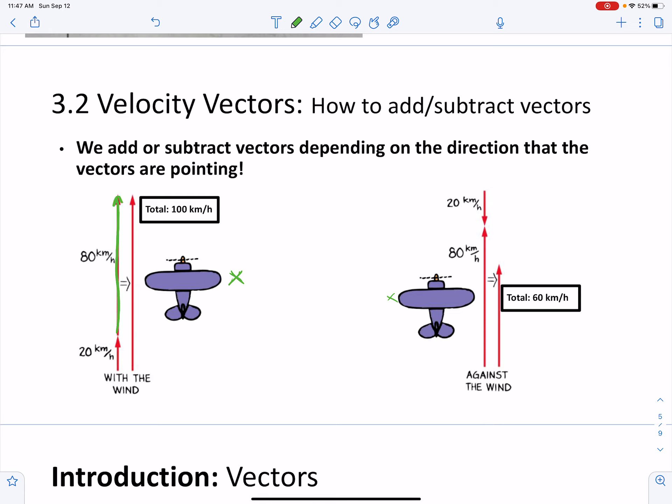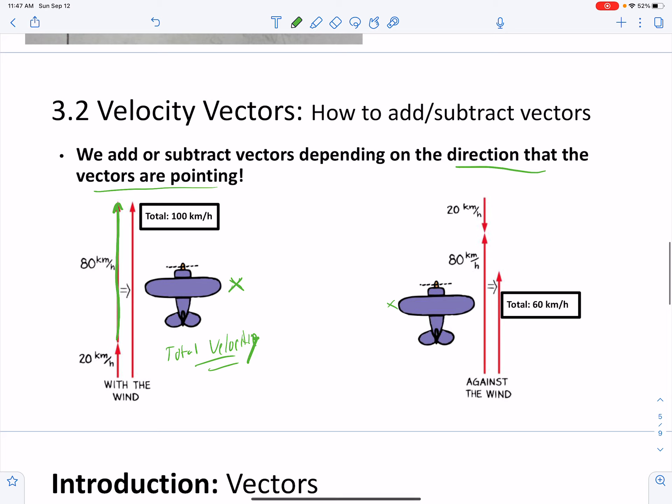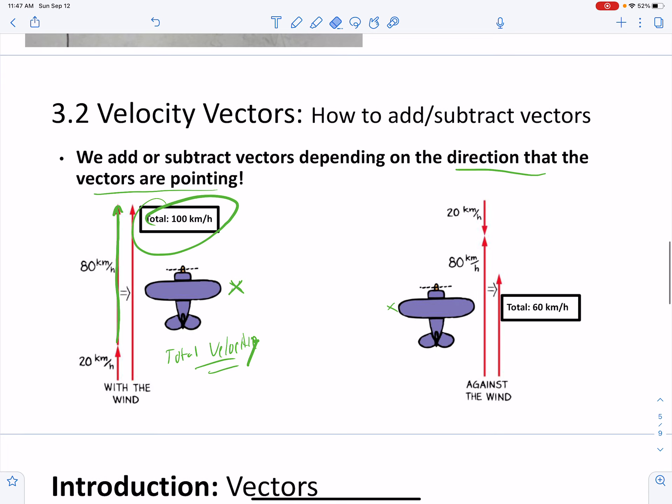And so Dwayne The Rock Johnson decides to go north with the wind. And so his total velocity is going to be the sum of all of the velocities that are pointing in the same direction. So he's lucky he gets 100 kilometers per hour, right? Experienced physicist, Dwayne The Rock Johnson, of course. We love him.